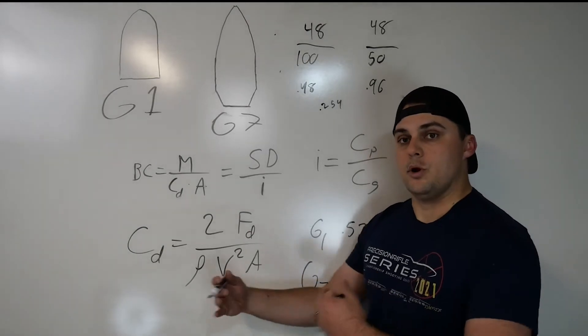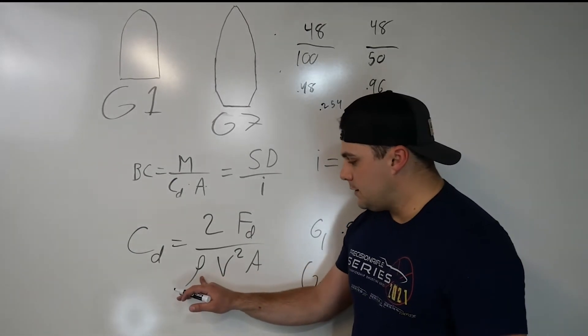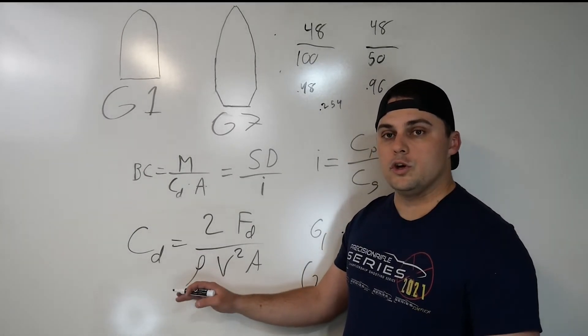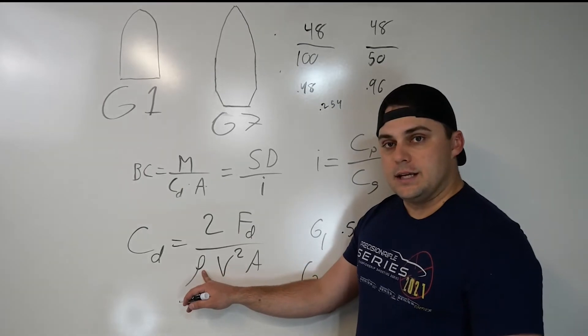So we know the velocity is always changing, the bullet's always slowing down. The air density, this one should be kind of constant for where you're at, but it's always good to know when you go shooting in a new location to know what that air density is.